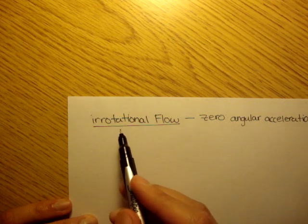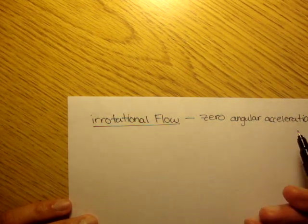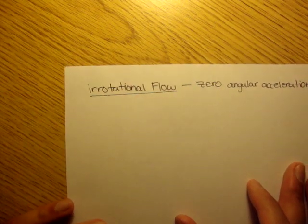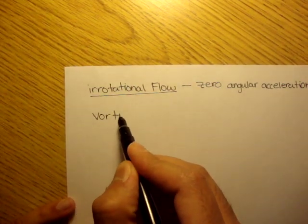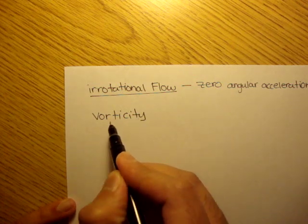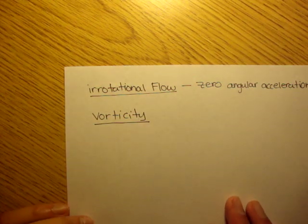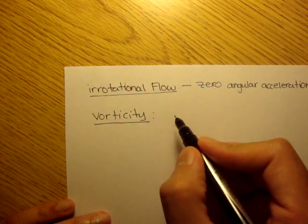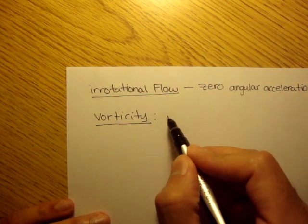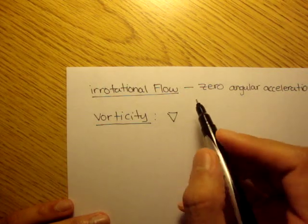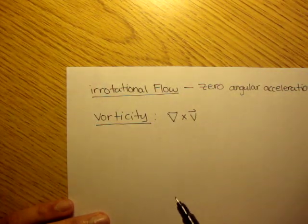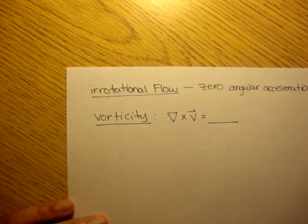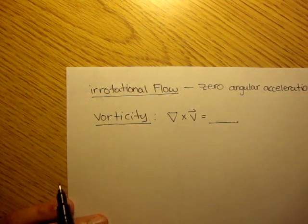Irrotational flow is zero angular rotation. The second term is vorticity. Vorticity — we've seen this before in a previous video. All it is is just a del vector crossed with the velocity field. So del cross v. Whatever number that equals is the vorticity.